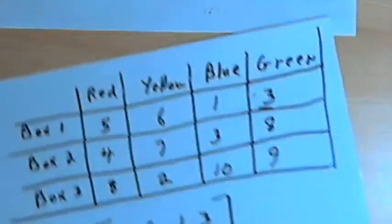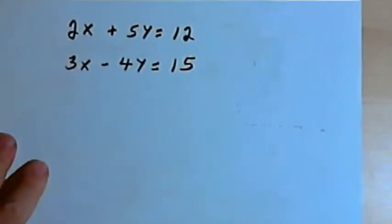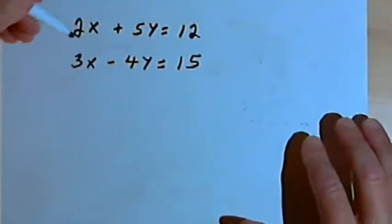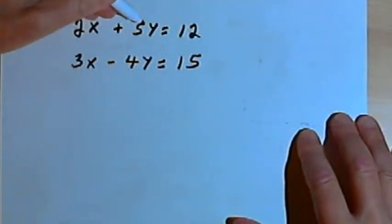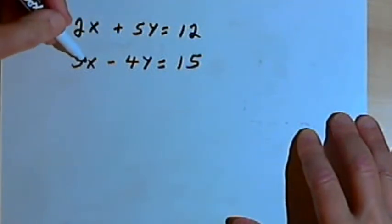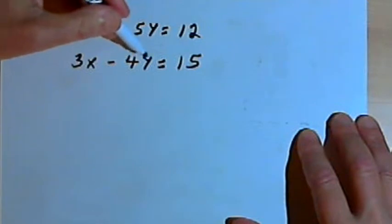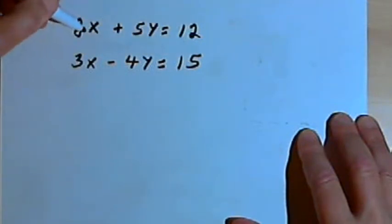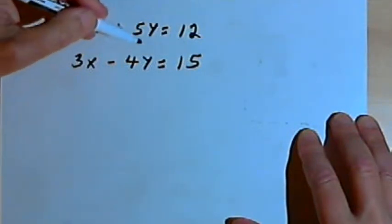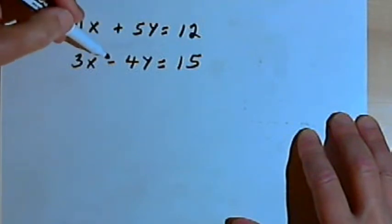Here's another example of that. Let's say I've got a system of equations: 2x plus 5y equals 12, and 3x minus 4y equals 15. And I just want to represent the numerical parts of these two equations.